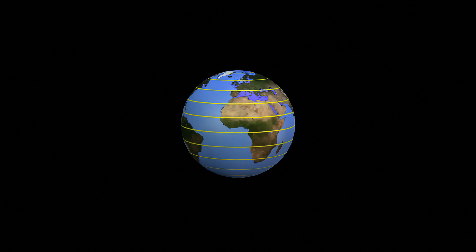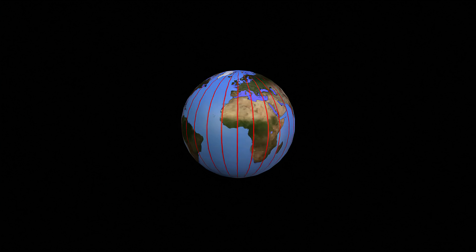Lines of latitude are drawn parallel to the equator, defining north-south coordinates. The equator is zero degrees. Lines of longitude radiate from the poles, defining east-west coordinates. Zero degrees longitude passes through Greenwich, England.